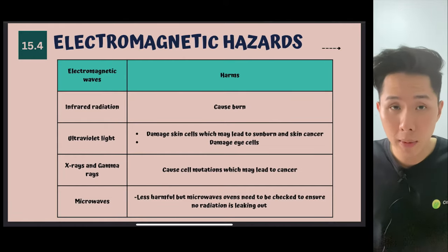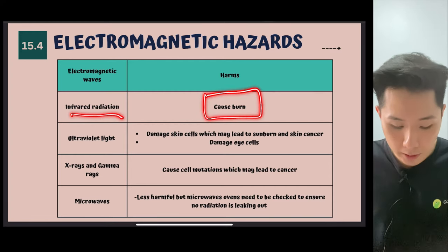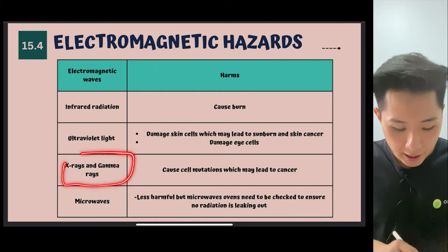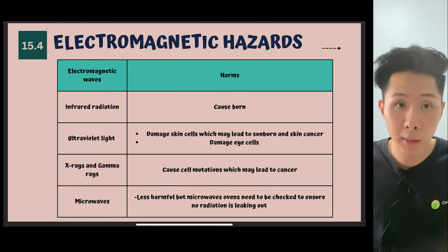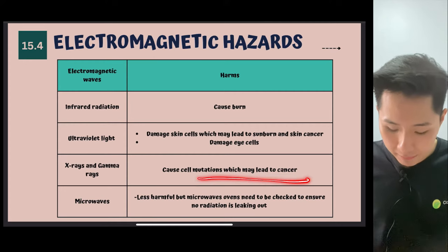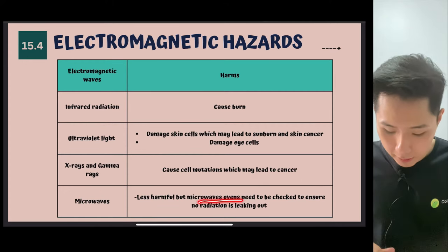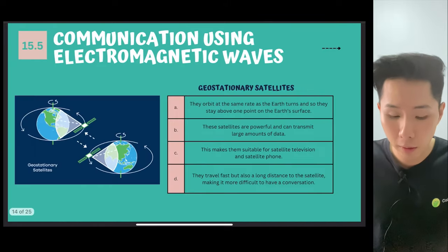Alright, so here are some of the electromagnetic hazard, meaning the dangers of using these radiation. For infrared, it will cause some burning. Ultraviolet, it might damage skin cells. X-ray and gamma ray, they might cause cell mutation. Because what they do is that they mutate your gene to cause mitosis. That leads to tumor. Microwave, but when you use microwave oven, do make sure that no radiation is leaking out. Even though they are less harmful, it's still harmful.